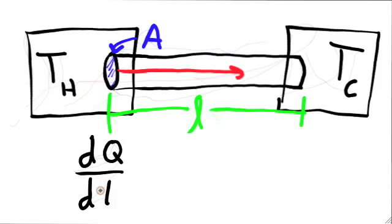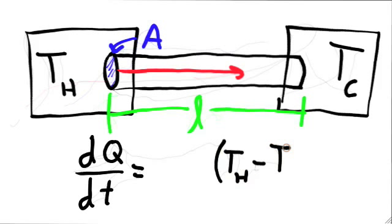First, the rate of heat flow is proportional to the difference in temperatures between the hot object and the cold object. The bigger the difference in temperatures, the faster the heat flow. Drawing on the water flowing through a pipe analogy, the rate of heat flow is also proportional to the cross-sectional area A of the rod. In a moment we'll explain why it's inversely proportional to the length of the rod. Finally, depending on the material the rod is made of, there is a thermal conductivity constant, k.